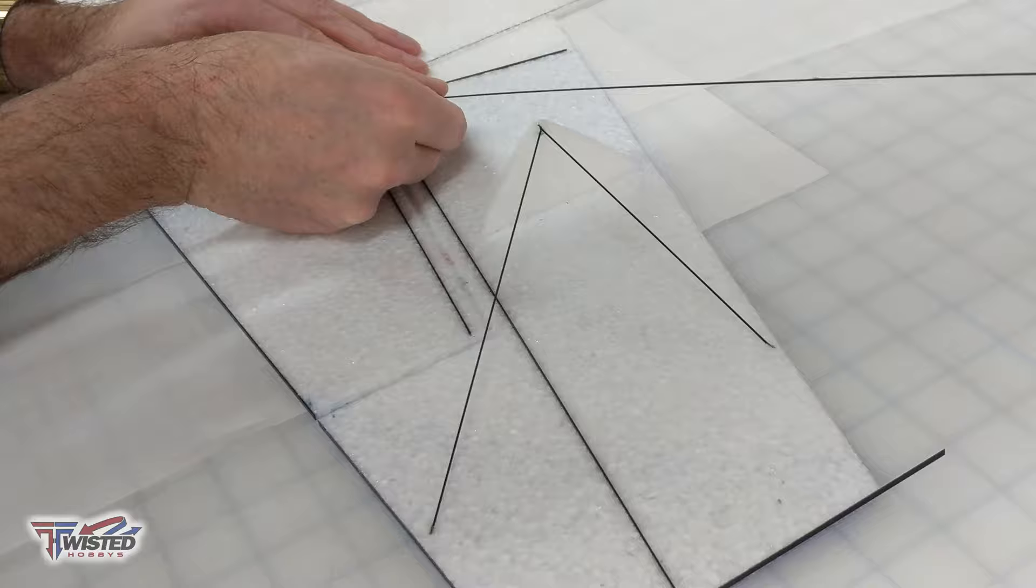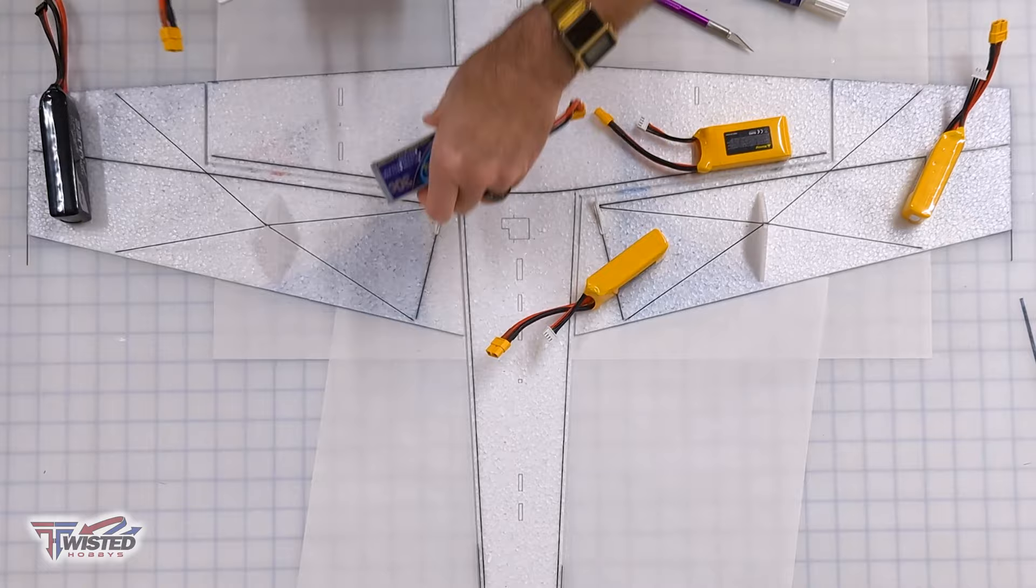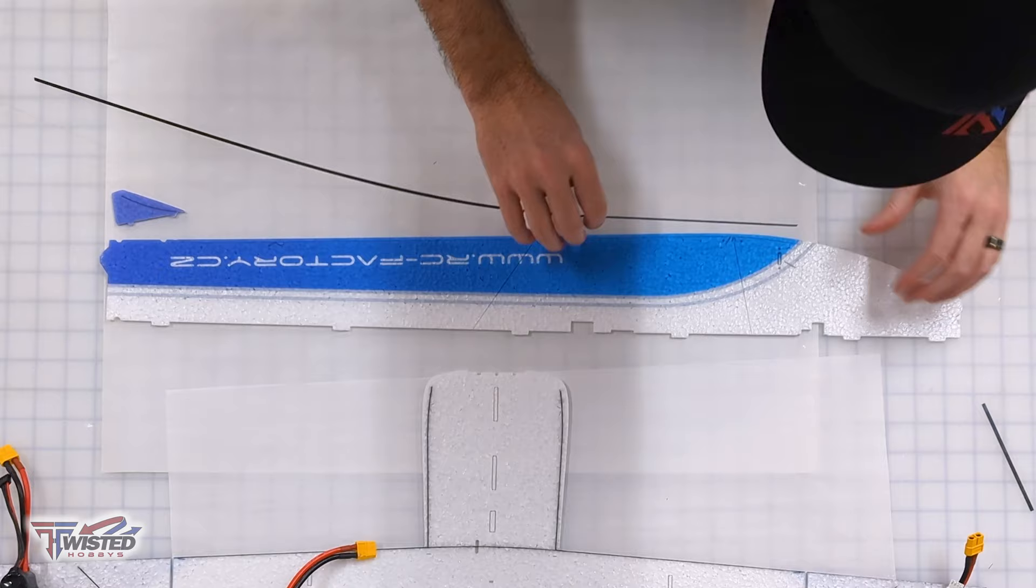As you see here, I'm using some sharp diagonal cutters in order to trim these. If I was working with something a little thicker, then I would probably use a Dremel tool cut-off wheel type of thing to cut those.